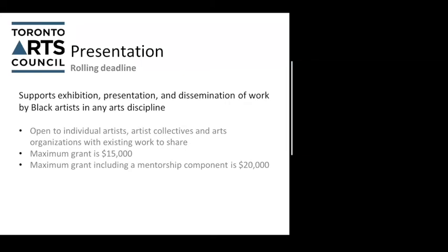Another component under the project stream is presentation, which will also have a rolling deadline. This supports exhibition, presentation, and dissemination of work by Black artists in any arts discipline. It's open to individual artists, artist collectives, and arts organizations with existing work to share — it does not fund creation. The maximum grant is $15,000, with an optional mentorship component making you eligible for up to $20,000. Eligible expenses include administrative fees, installation, rehearsal, venue, production, dissemination, publicity, marketing, outreach, and fees paid to artists, collaborators, and mentors.